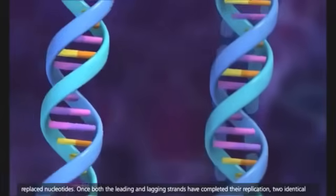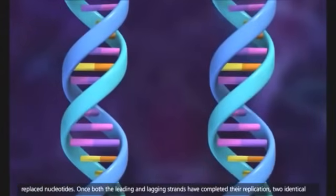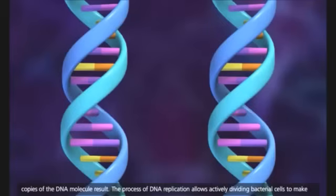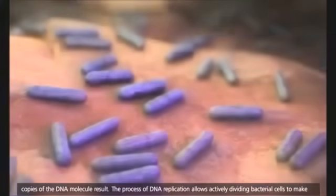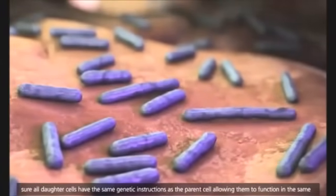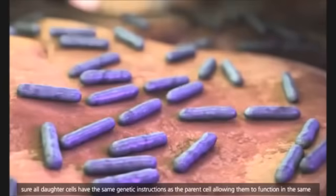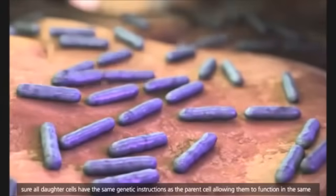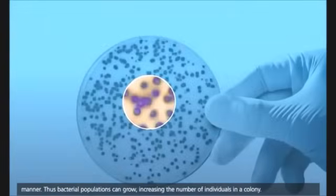Once both the leading and lagging strands have completed their replication, two identical copies of the DNA molecule result. The process of DNA replication allows actively dividing bacterial cells to make sure all daughter cells have the same genetic instructions as the parent cell, allowing them to function in the same manner.